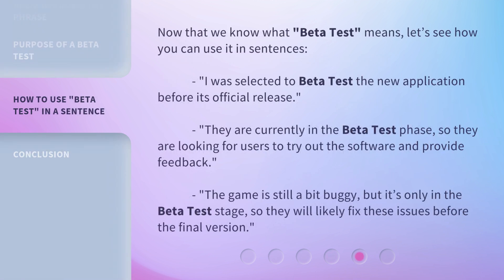The main goal of a beta test is to identify bugs, issues, or any improvements that need to be made to ensure the final version of the product is as flawless as possible. Companies or developers use this phase to gather real-world feedback from actual users, which is invaluable for creating a successful product.